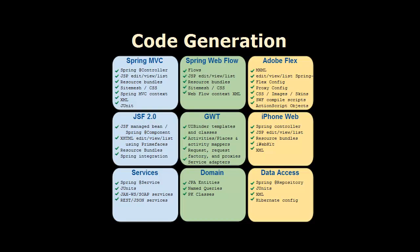Here's a high-level inventory of the different types of application components that can be generated using MyEclipse for Spring. As you can see, there are several application groups, and for each group there are many application components that can be generated. The focus of this screencast is JSF and PrimeFaces code generation, and the primary goal is to generate the respective application components. So at a minimum, I must direct MyEclipse for Spring to generate the JSF application group.